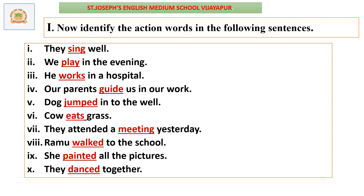Now identify the action words in the following sentences: 'They sing well' — 'sing' is the action word. 'We play in the evening' — 'play' is the action word. 'He works in a hospital' — 'works' is the action word. 'Our parents guide us in our homework' — 'guide' is the action word. 'The dog jumped into the well' — 'jumped' is the action word. 'The cow eats grass' — 'eats' is the action word. 'They attended a meeting' — 'attended' is the action word.